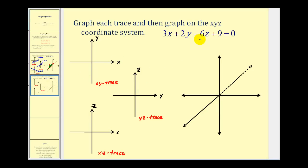Here we have three x plus two y minus six z plus nine equals zero. To determine the xy trace, we'll set z equal to zero, giving us the line three x plus two y equals negative nine. If we set y equal to zero, the x intercept will be negative three. And if we set x equal to zero, we'd have two y equals negative nine, so y equals negative four point five. So the given plane intersects the xy plane along this line here.